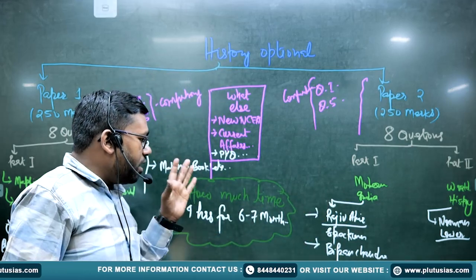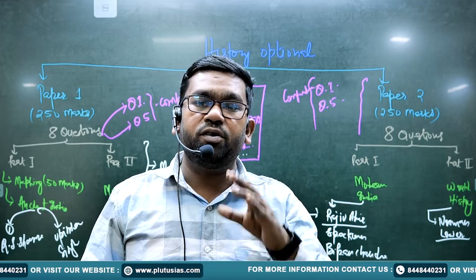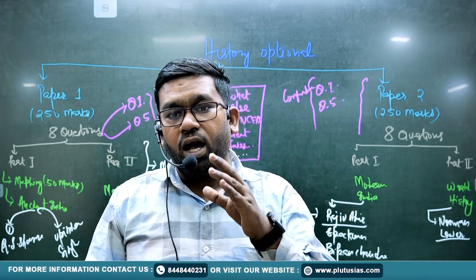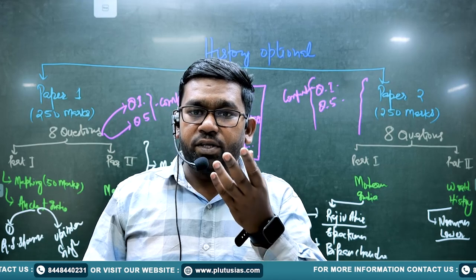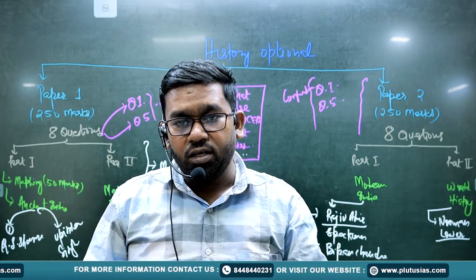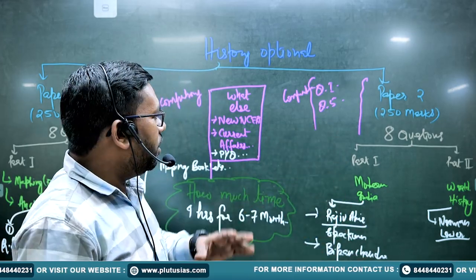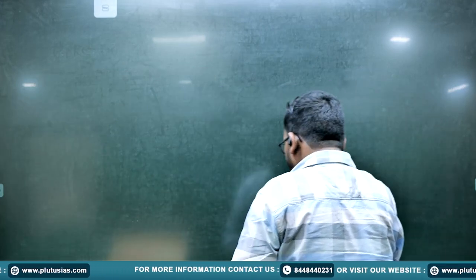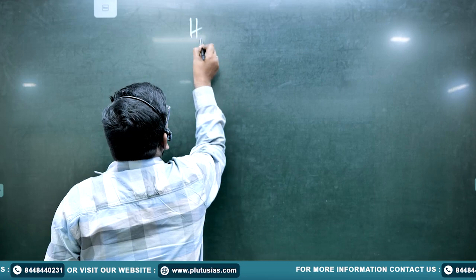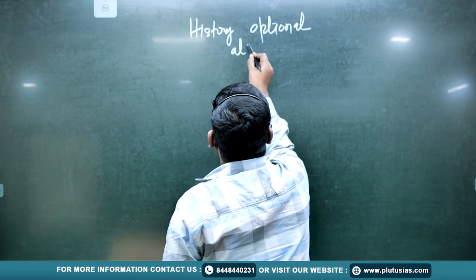At Plutus IAS, we have brought a course for history optional. The aim of this course is to complete the entire syllabus within five to six months. If you join the history optional course at Plutus IAS, you will cover all the required content without needing to read much extra outside of what is provided.